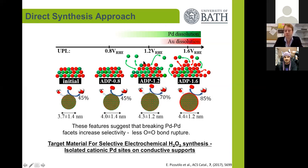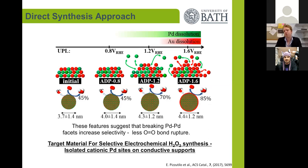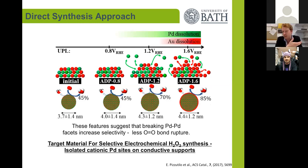By starting to take some palladium out of the surface — going up to 1.2 V — we had an increase to 70% selectivity. And by disrupting the particle even more, we had a selectivity of around 85%. This is not just passivating the particle with a gold surface, because the onset point for this reaction still remained lower than gold, so these particles were still more active than a gold-only particle, but the selectivities were approaching very good values.